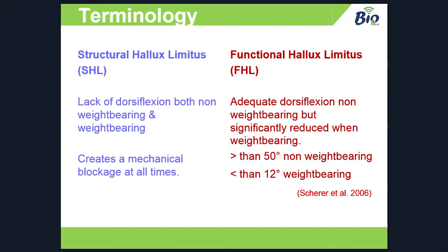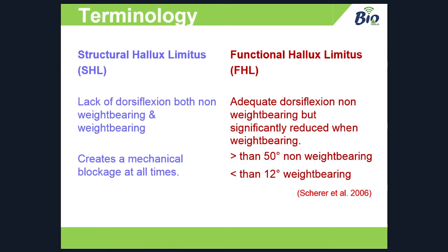According to the paper I've referenced, my guide for these limits is greater than 50 degrees of dorsiflexion non-weight bearing on the couch, but less than 12 degrees when the same patient goes into weight bearing. I'd use those figures loosely as quoted in the research, but you also have to think about who's taking the measurements with the goniometer and how reliable that is. I think it does serve as quite a good guide though.